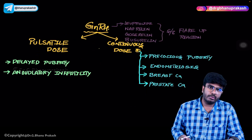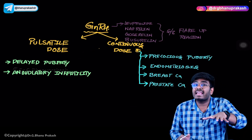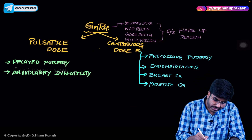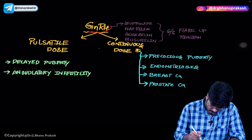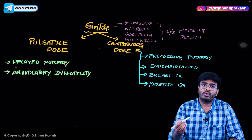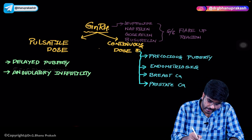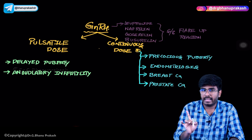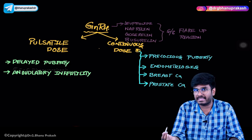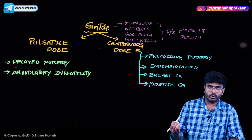Now let's talk about drugs which are GnRH analogs — GnRH-like drugs that act on the gonadotropes just like GnRH. Examples of GnRH analogs include Leuprolide, Nafarelin, Goserelin, and Buserelin — drugs ending with the suffix '-relin'. Note that '-relix' drugs are GnRH antagonists; '-relin' are the analogs we are discussing now.